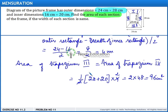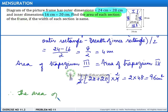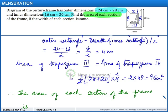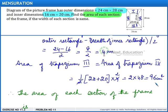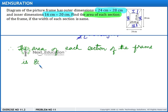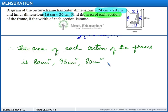This is the area of trapeziums 3 and 4. We conclude that the areas of each section of the frame are: 80 square centimeters for section 1, 80 square centimeters for section 2, 96 square centimeters for section 3, and 96 square centimeters for section 4. This is the end of the solution.